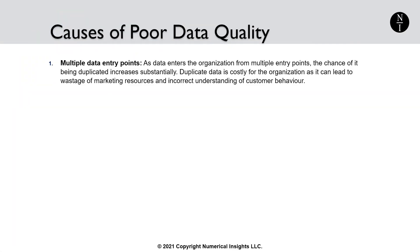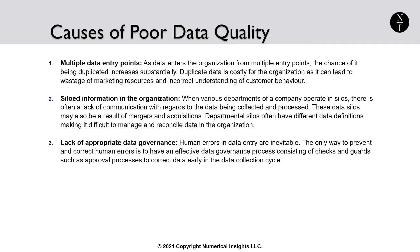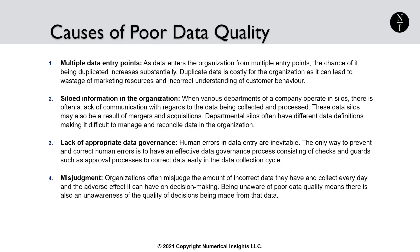So what are the causes of poor data quality and how do we improve that data quality? There are four main causes of poor data quality in organizations. The first one is having multiple data entry points. As data enters the organization from multiple entry points, the chance of it being duplicated increases substantially. Duplicate data is costly for the organization and it could lead to wastage of marketing resources and incorrect understanding of customer behavior.